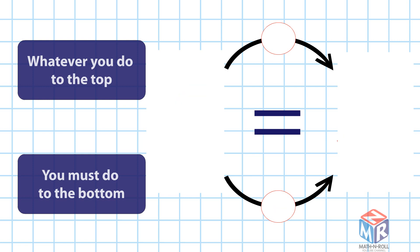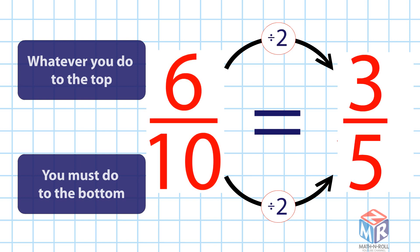Let's try another example. We have 6 tenths and we want to find the equivalent by dividing by 2. We get 3 over 5.